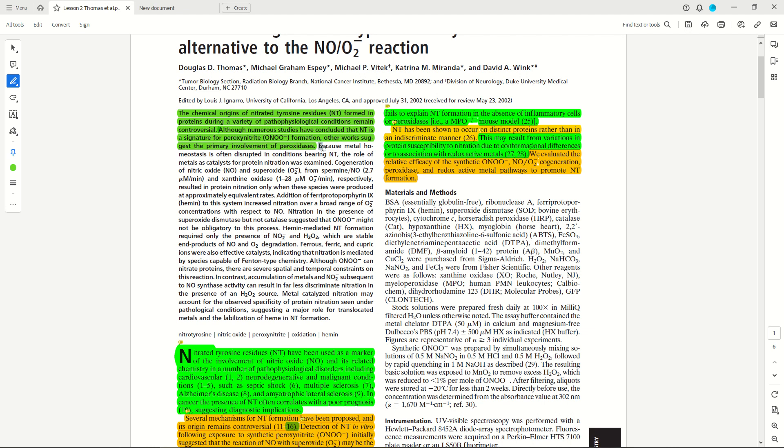And then finally, because metal homeostasis is often disrupted in conditions bearing NT, the role of metals as catalysts for protein nitration was examined. And so this indicates the purpose of the study, which the hypothesis is a little bit better explained within the introduction, but this alludes to what the purpose of this is to test this hypothesis.